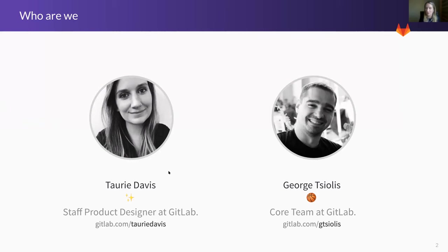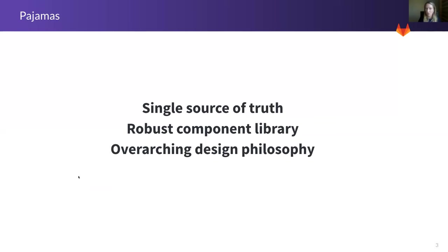I'm going to run through a bit about what Pajamas is, how the repositories that make up Pajamas are structured, a little bit about our current initiatives and priorities, some documentation to help get started, and then George will walk us through how he contributes to the projects as well as some contribution tips. The goal of our design system is to be a single source of truth for robust components within our library, including usage and implementation guidelines, overall design philosophy, and guiding principles. We opened a GitLab issue to name our design system almost a year ago, and Pajamas was the clear winner — it's a nod to our remote culture and working from home, sometimes in our pajamas.